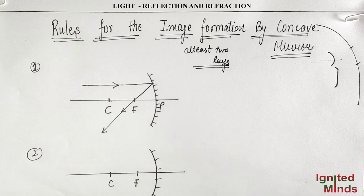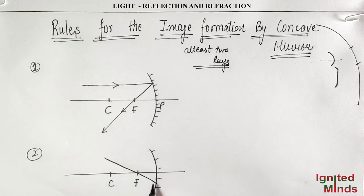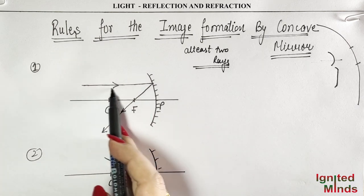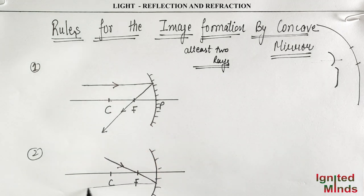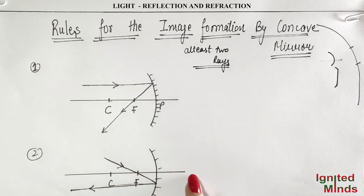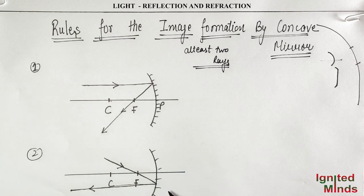So if the ray passes through the focus point, this incident ray through the focus point — after reflecting, it goes parallel to the principle axis. So the first rule and second rule are opposites of each other.